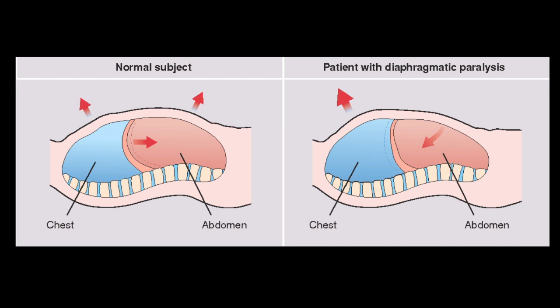The diaphragm is the main muscle of respiration, especially of inspiration. Because of the paralysis of the diaphragm, the patient mostly dies in Myasthenia Gravis.